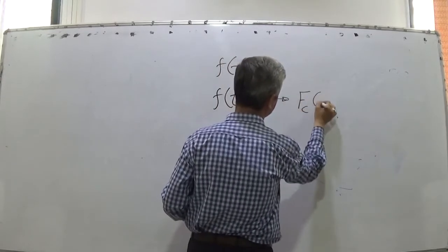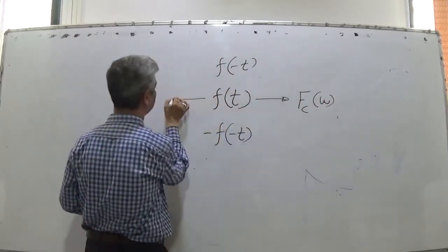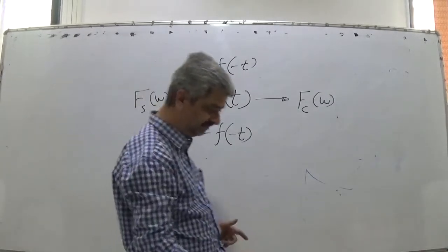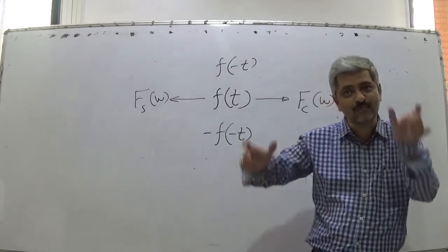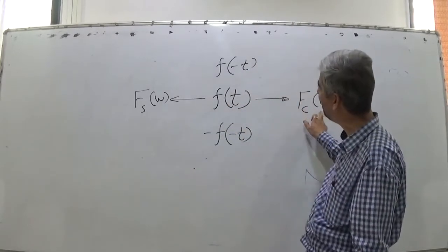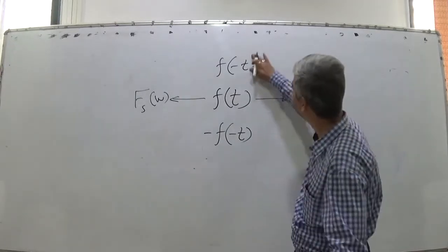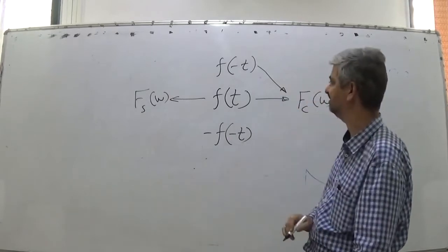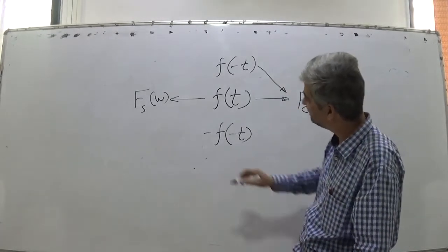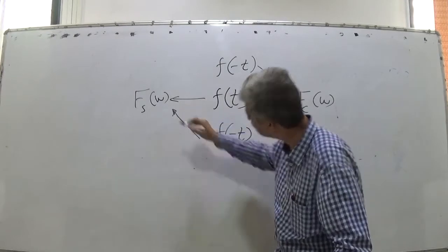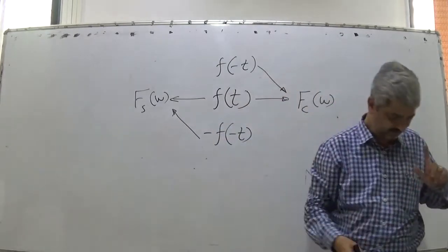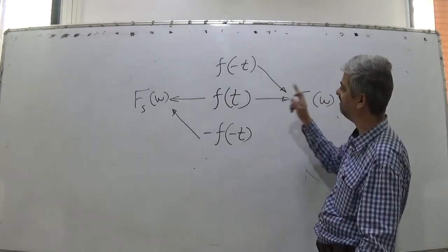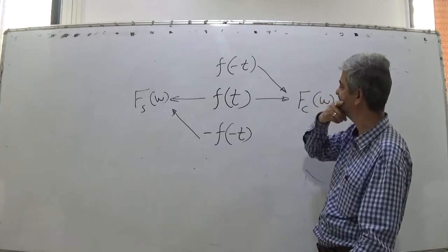Suppose this f(t) is having a cosine transform Fc(ω) and a sine transform Fs(ω). If I know only Fc(ω), then I know that its image f(-t) also gives me this. If I only know sine transform, then inverted image gives me this. So if I know only cosine transform, then cosine transform can be either because of this or because of this, so I get two answers.